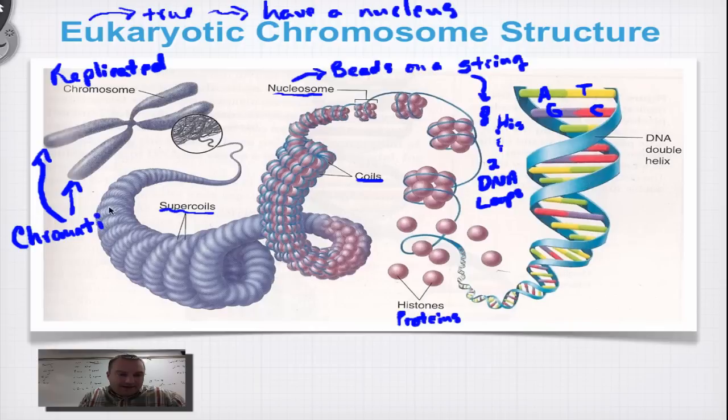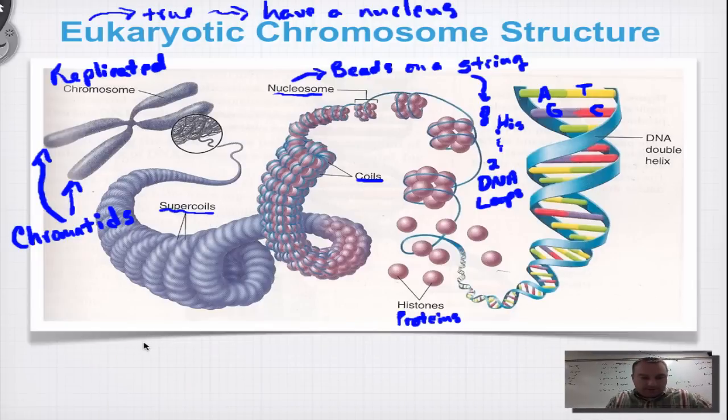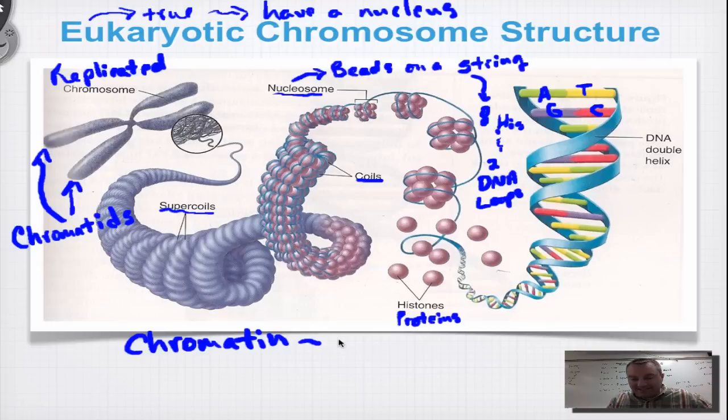And they are called chromatids. Chroma T-I-D. Chromatids. Now, it gets a little confusing because we have the words chromosomes, chromatid, and now we have a third word. And it's called chromatin. See that word I-N? That refers to protein. Chromatin is basically DNA and the proteins that it's wrapped around.